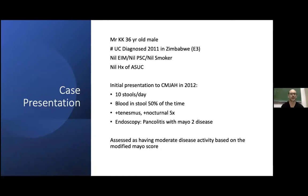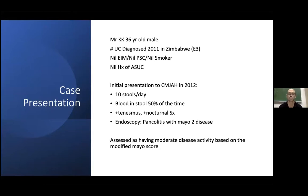Our case: Mr. KK, a 36-year-old gentleman, was diagnosed with ulcerative colitis in 2011. The extent of disease was noted to be pancolitis. We don't have the actual images or biopsy results from that original scope — this is all based on a report. In the rest of his background history, he had no extraintestinal manifestations, no primary sclerosing cholangitis, he's a non-smoker, and there was no history of any admissions for acute severe ulcerative colitis.